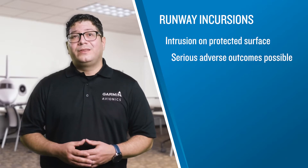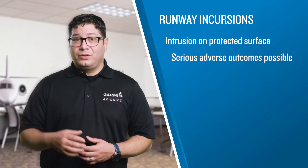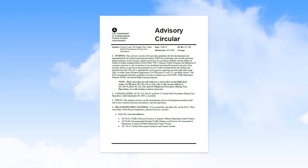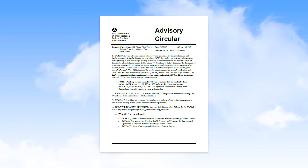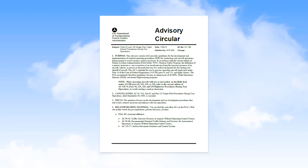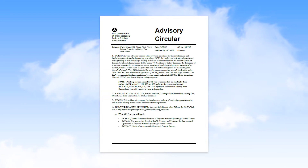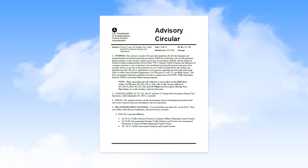In this video, we take a look at things that you can do to reduce your chances of committing a runway incursion. FAA guidance on this subject comes from AC 91-73B. In this document, which is focused on single pilot operations, they discuss the need for establishing Standard Operating Procedures, or SOPs, that prescribe activities and behaviors that will help to eliminate runway incursion events.